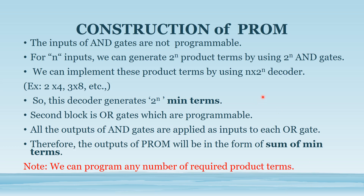To construct a PROM, the first block contains fixed AND gates — not programmable — with N inputs. It can generate 2^N product terms using 2^N AND gates, implemented by an N×2^N decoder (e.g., 2×4 or 3×8). This decoder generates 2^N minterms. The second block is a programmable OR gate. All 2^N minterm outputs from the AND gates are applied as inputs to the OR gates, so the PROM output is in the form of a sum of minterms, and any required product terms can be programmed.